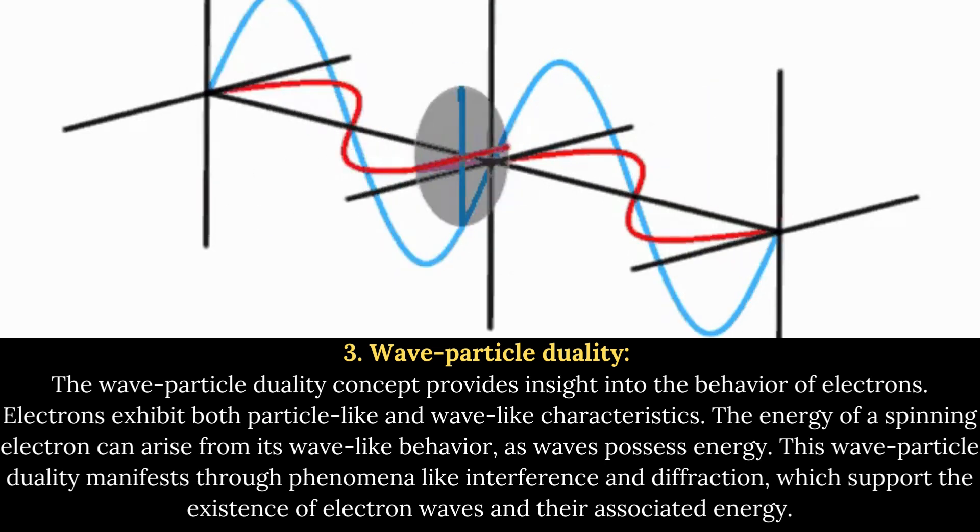This wave-particle duality manifests through phenomena like interference and diffraction, which support the existence of electron waves and their associated energy.